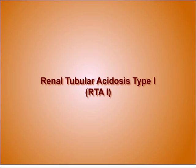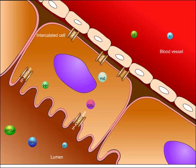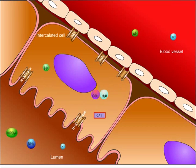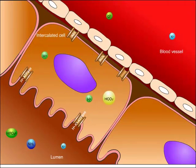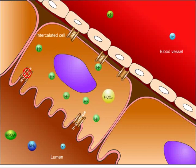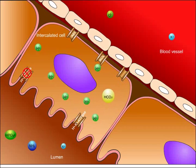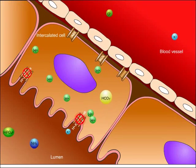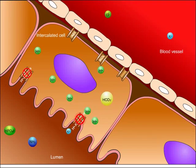In renal tubular acidosis type 1, the distal nephron is unable to secrete hydrogen ions. Carbonic anhydrase type 2 binds carbon dioxide and water to form carbonic acid, which breaks down into hydrogen and bicarbonate. Diminished hydrogen ATPase activity is the most common cause of RTA type 1, resulting in hydrogen being unable to be secreted. Many different disorders can cause diminished hydrogen ATPase activity, including mutation and immunologic injury, which occurs in Sjögren syndrome. Impaired function of hydrogen-potassium ATPase can also cause RTA type 1; when the pump is impaired, potassium reabsorption is decreased, leading to hypokalemia.